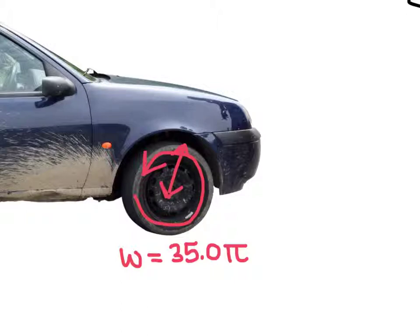And let's say we also knew the radius of this circle to be 25 centimeters. We could determine exactly how fast the car is moving down the road. In other words, we can calculate its tangential velocity.